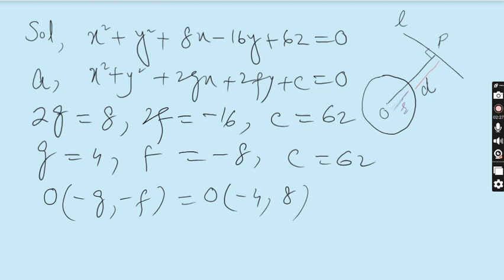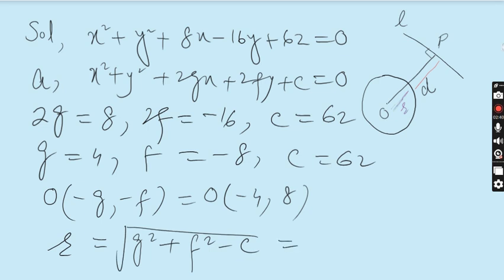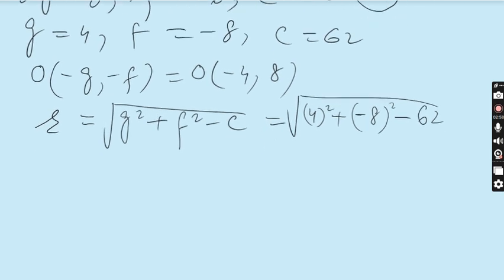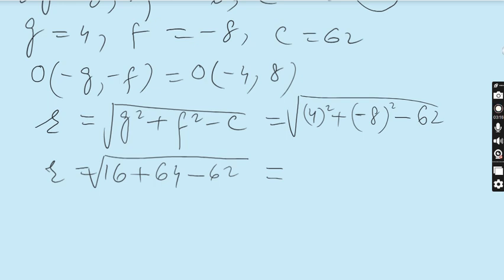The second requirement is to find the exact value of the radius. The formula is r = √(g² + f² − c). So r = √(4² + (−8)² − 62) = √(16 + 64 − 62) = √18 = 3√2. So 3√2 is the radius — that completes Part A.